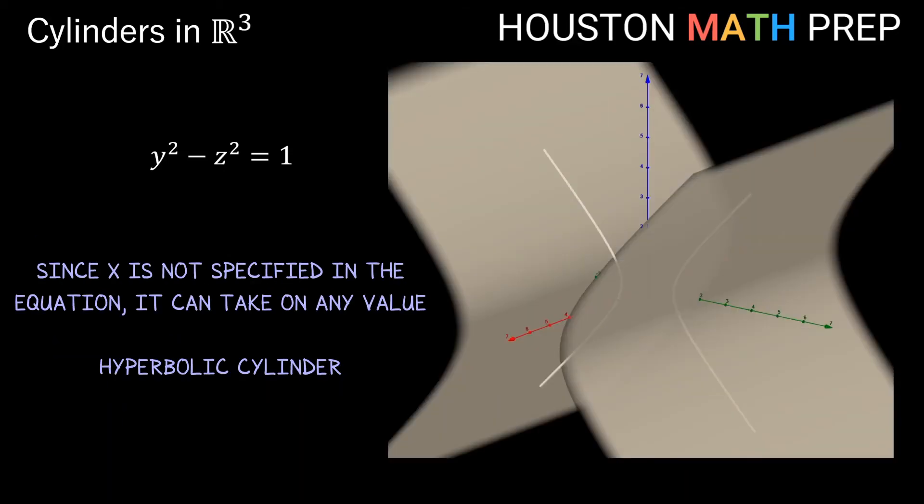So as long as a point in 3D space satisfies y² - z² = 1, then x can take on any value and we get a cylinder in the shape of a hyperbola that extends in the x direction.